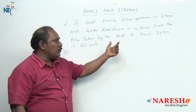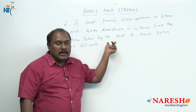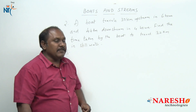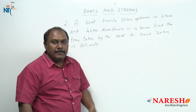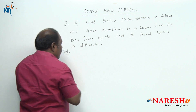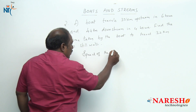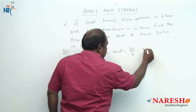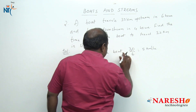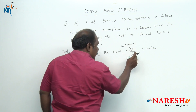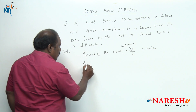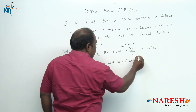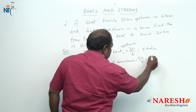We need to find the time to travel 32 kilometers in still water, so first we find the speed of the boat in still water. The boat travels 30 kilometers upstream in 6 hours, so speed upstream equals 30 divided by 6, which is 5 kilometers per hour. Speed downstream equals 44 divided by 4, which is 11 kilometers per hour.